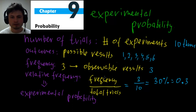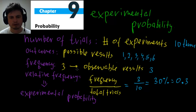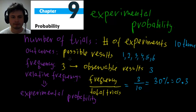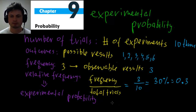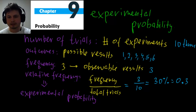In almost every experimental probability problem you'll have a frequency — how many times something happens — and you'll divide it by the total number of trials to get the relative frequency, or experimental probability. Let's look at an example to make this clearer.